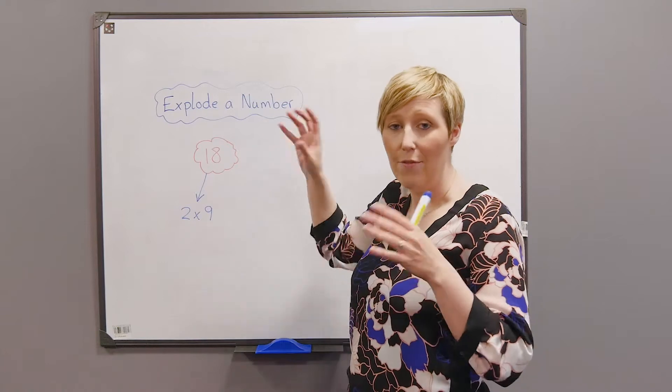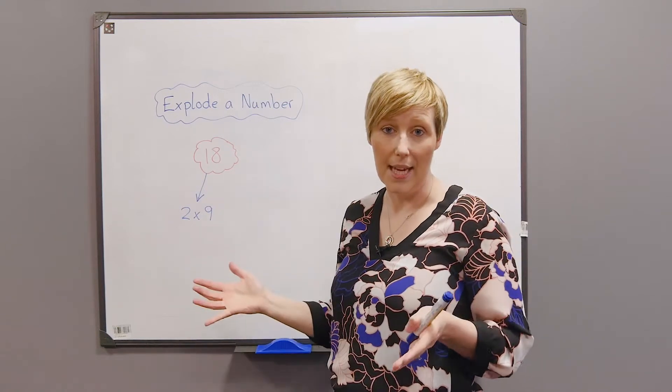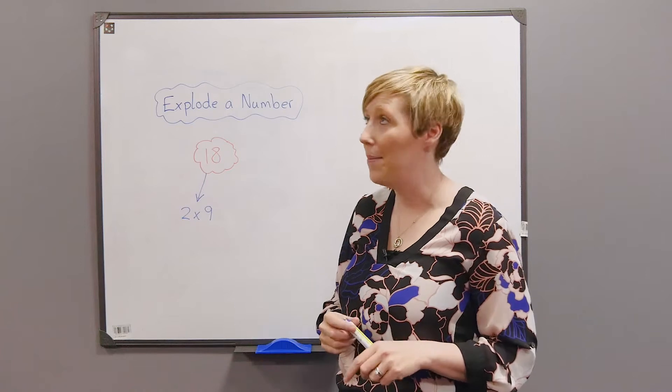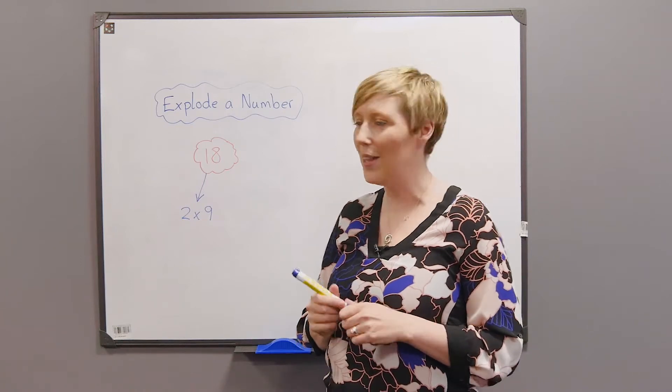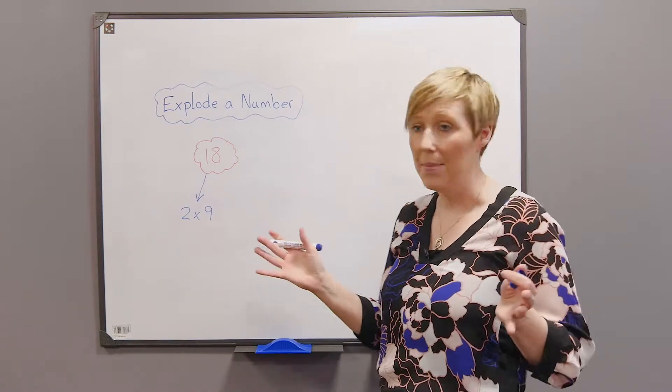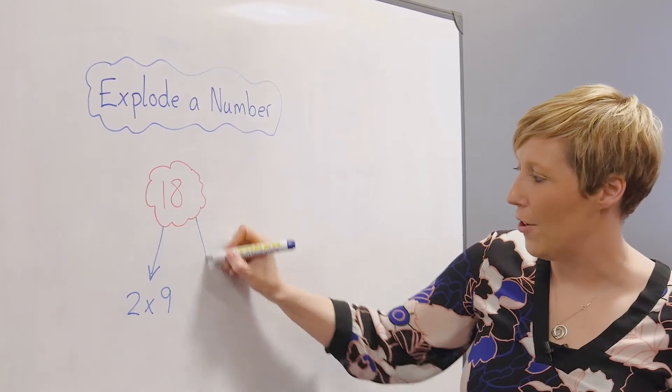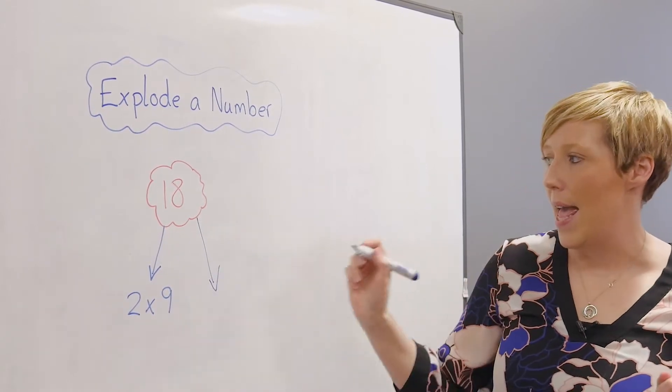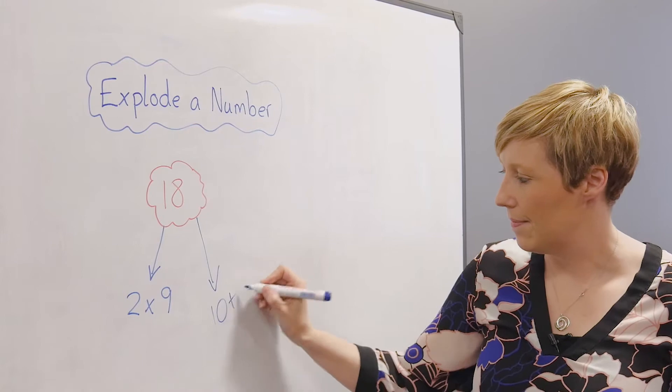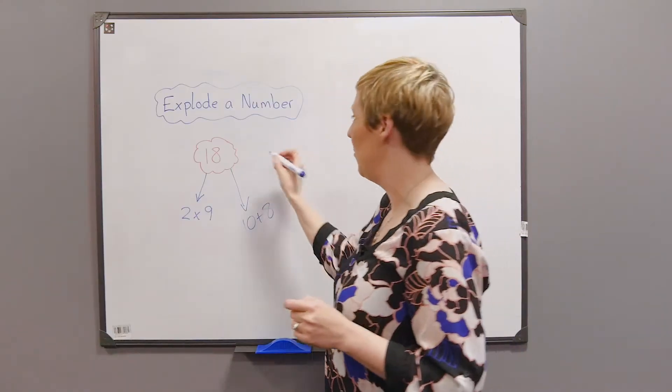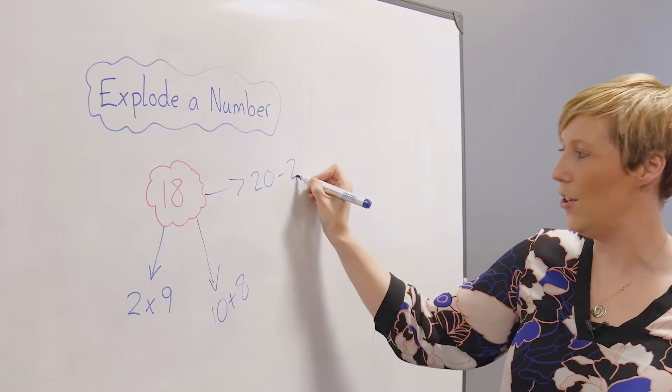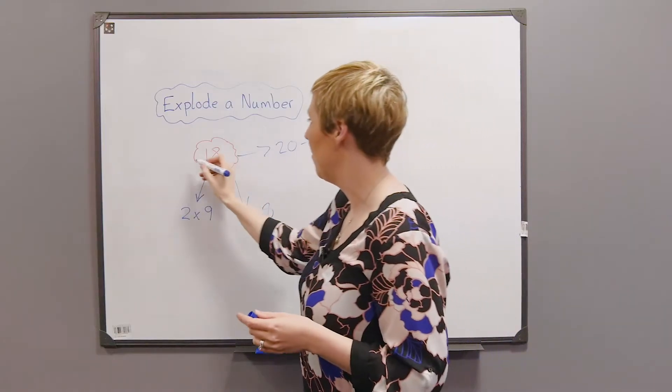So I've just started with 2 times 9, and this can go on forever. It's amazing just what children will come up with. So it could be 2 times 9 is 18, it could be 10 plus 8 is 18, it could be 20 take away 2 is 18.